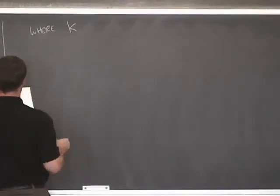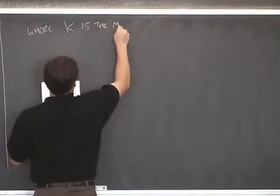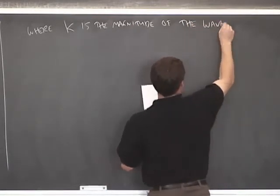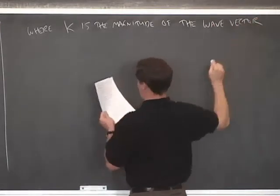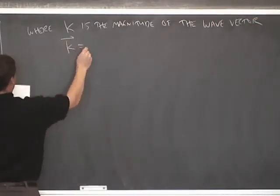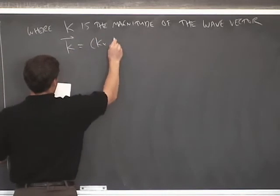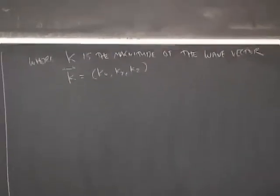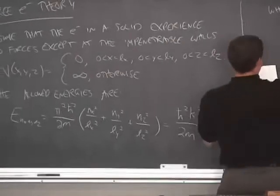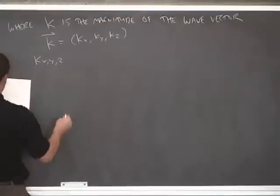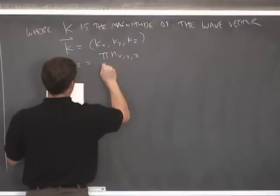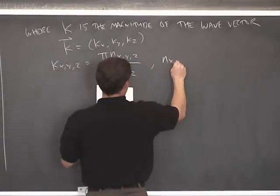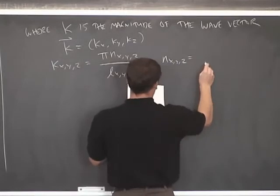So we're introducing k, where k is the magnitude of the wave vector. The wave vector is k vector, and it will have three components, kx, ky, kz. Where we can see by inspection of this equation compared to that equation, that kx, y, and z are equal to pi n sub x, y, and z divided by l x, y, and z. Where the quantum numbers for the particle in a box are positive integers.